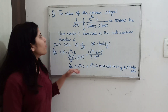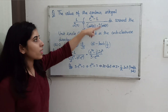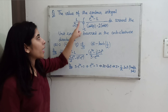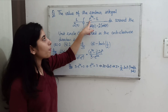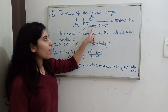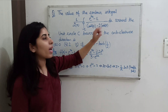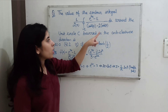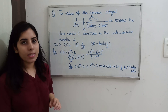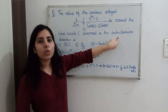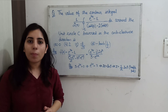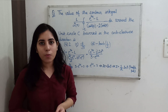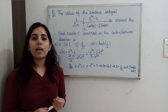The question asks for the value of the contour integral: (1 / 2πi) times the integral over the closed contour C of (e^(4z) - 1) / (cosh(z) - 2sinh(z)) dz, around the unit circle C traversed in the anti-clockwise direction. Since the direction is anti-clockwise, by Cauchy's residue theorem the formula is 2πi times the sum of residues at those poles which lie within the contour.